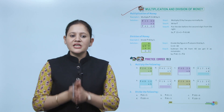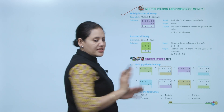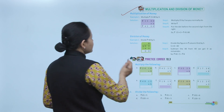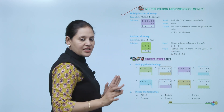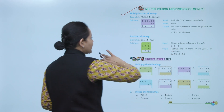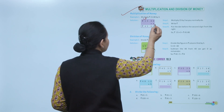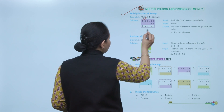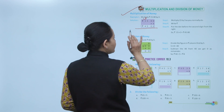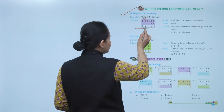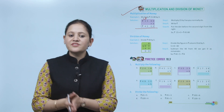Next is multiplication of money. Multiply rupees 15 by 3 — 15 rupees means 00 paisa. Step 1: multiply 15 by 3 as you normally do. 5 times 3 is 15, write 5 carry 1; 3 times 1 is 3 plus 1 is 4. So rupees 45. Put the dot before the second digit from the right. Answer is rupees 45.00.